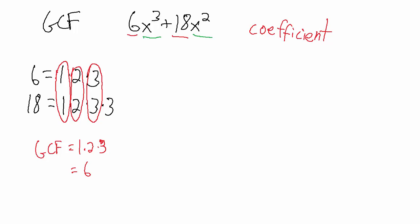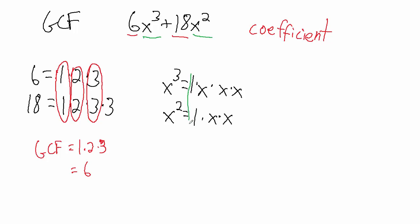Now we do the same thing for the variable part. x cubed equals 1 times x times x times x, and x squared equals 1 times x times x. Just like before, we look at what factors these two have in common. They have a factor of 1 in common, a factor of x, and one more factor of x. x squared is all out of factors, so the greatest common factor for the variable parts is 1 times x times x, which is x squared.